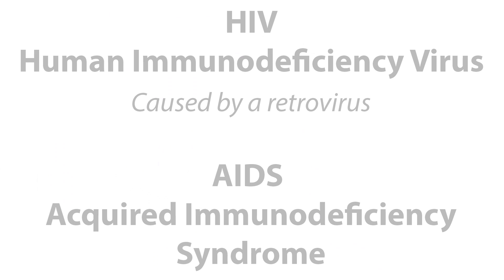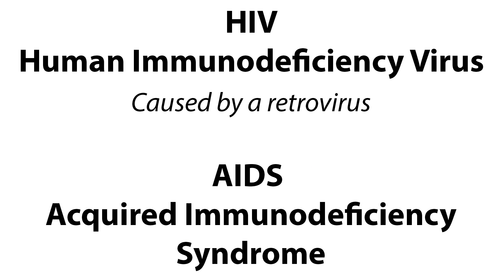Welcome to this video tutorial on AIDS infections and malignancies. Human immunodeficiency virus, or HIV infection, is an acquired infection that causes severe immune dysfunction. HIV infection causes the person to be unusually susceptible to other life-threatening infections and malignancies. HIV is caused by a retrovirus that in its most serious form results in acquired immunodeficiency syndrome, or AIDS.